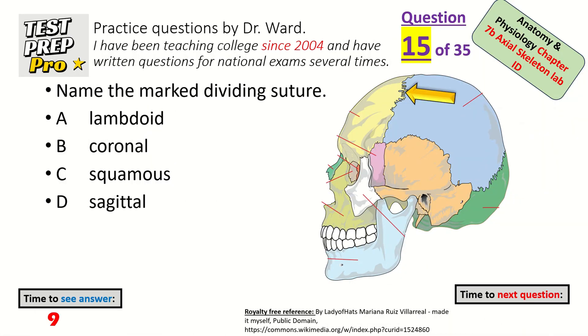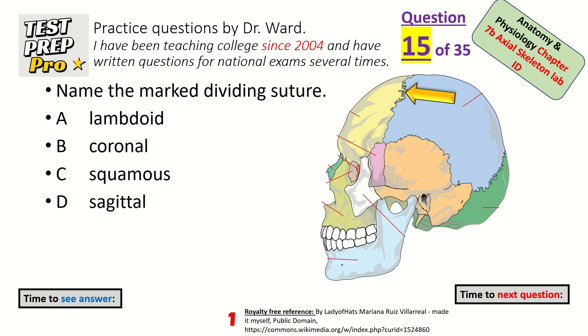Name the marked dividing structure between the frontal bone and parietal bone — what suture is it? Coronal suture.